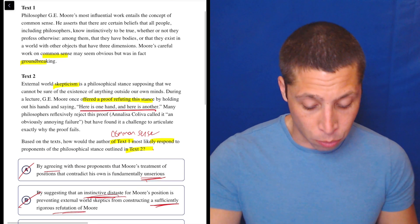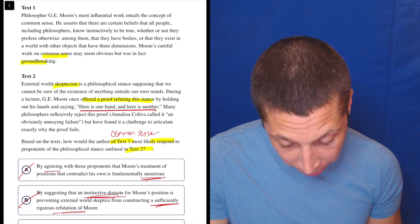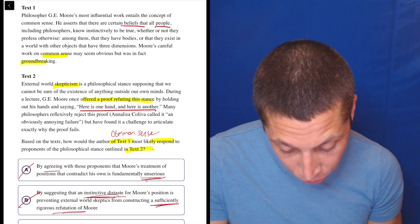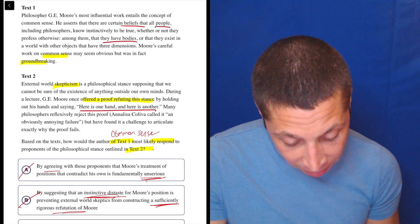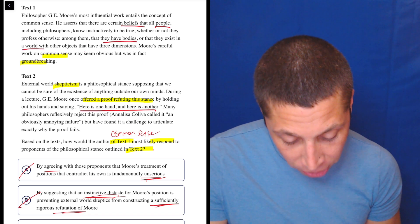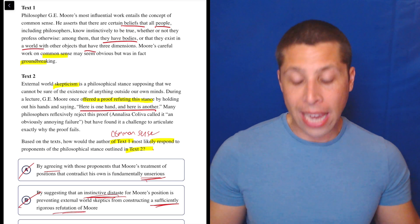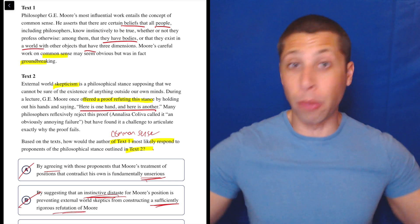So back to text 1 as well. They do talk about certain beliefs that all people hold, whether or not they profess otherwise. Among them, they have bodies. They exist in a world of objects of three dimensions, right? So I guess Moore is saying everyone holds those beliefs, including these external world skeptics.